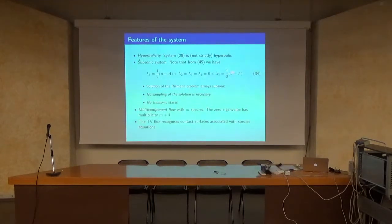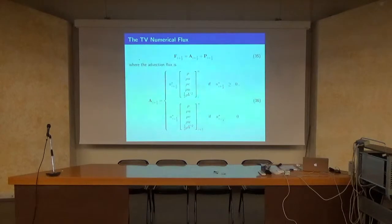For multi-component flow, the multiplicity will just grow by the number M if you have species equations added to the other equations. This scheme recognizes exactly contact surfaces associated with the species. The numerical flux is the obvious one for advection—it depends on the sign of the velocity.